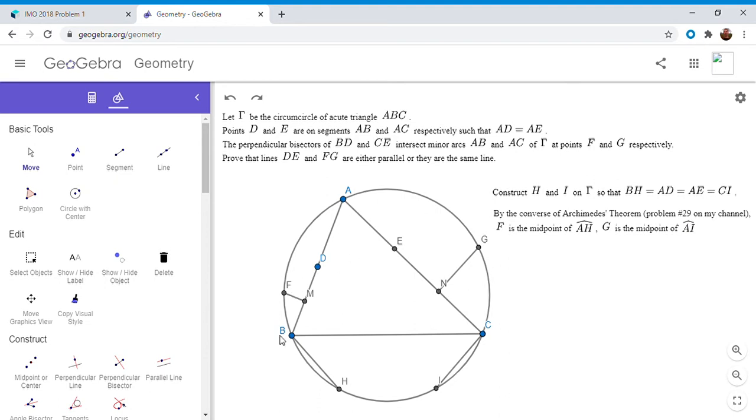By the converse of it, it turns out that F actually has to be the midpoint of arc AH. So I'm going to write that out. By the converse of Archimedes theorem, problem nine, F is the midpoint of arc AH and G is the midpoint of arc AI. Archimedes theorem isn't used super often, but I feel like this is a really nice example of a problem where you could use it.